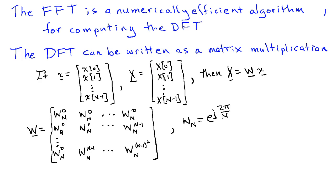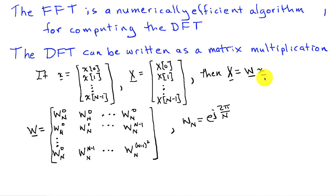The DFT can be written as a matrix multiplication, where a vector lowercase x holds the N samples of the time series, and a vector capital X holds the N values of the DFT coefficients. With those definitions, capital X, the DFT coefficients, are given by a matrix W times the vector of time series coefficients. The elements of this matrix are constants W_N raised to various powers, where W_N is the complex number e to the minus j 2π over N.